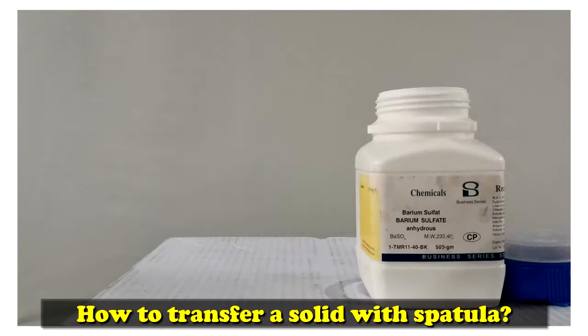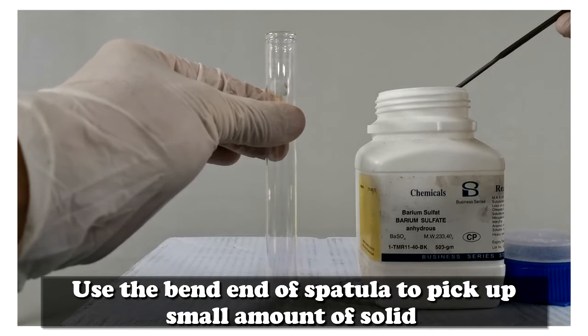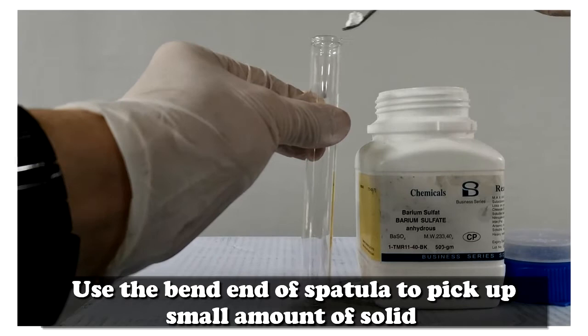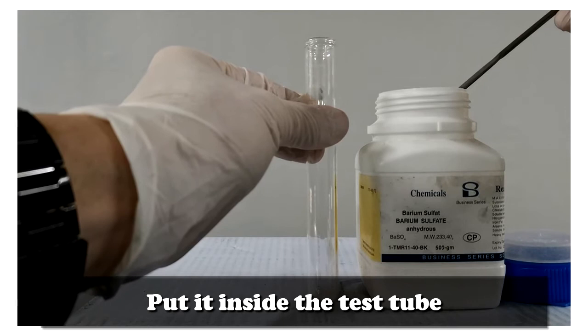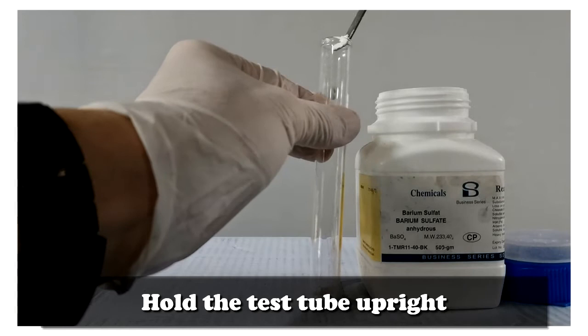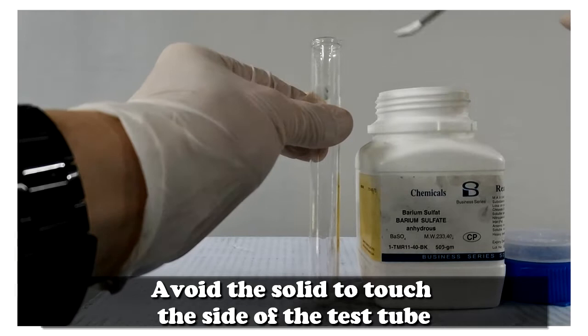How to transfer a solid with spatula? Use the bent end of spatula to pick up small amount of solid, then put it inside the test tube. Hold the test tube upright. Avoid the solid touching the side of the test tube.